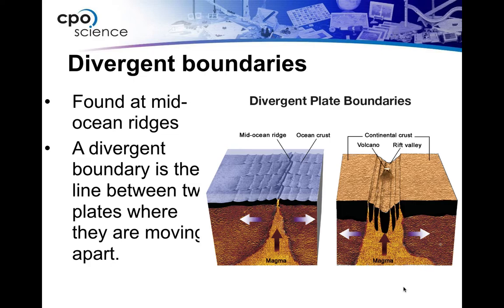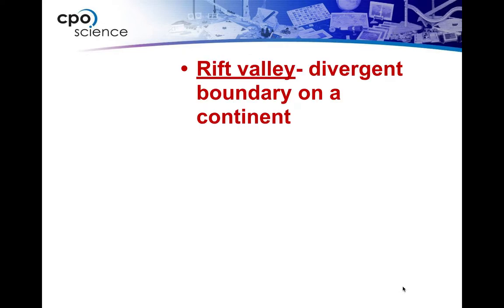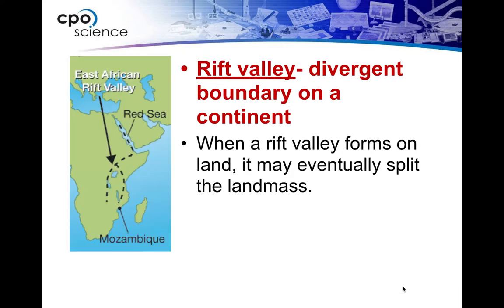Divergent plate boundaries are the ones that occur at mid-ocean ridges, where those two plates are moving away from each other. You can see in the picture on the left it's under the ocean, and on the right-hand side this is what it looks like when it happens on land. It can actually happen on land like we see in Iceland and a couple other places. When it happens on land, we call those rift valleys — divergent boundaries found on a continent. A rift valley can actually eventually split the land mass, and we see that happening in Africa.